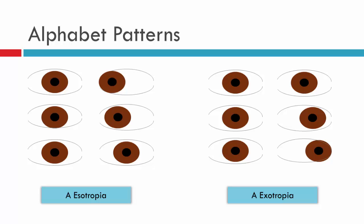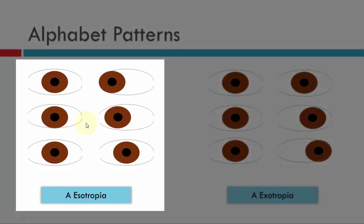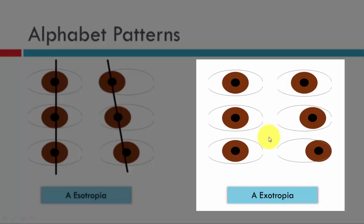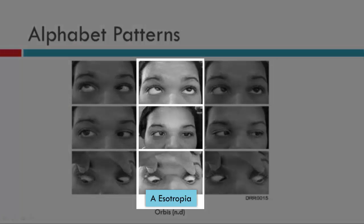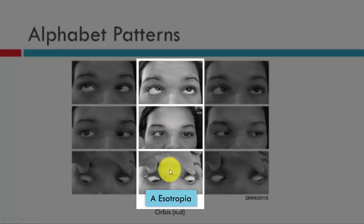Here we have A-patterns. In the image to the left, an A-eso: eso in primary, the eso gets larger in up gaze and smaller in down gaze, producing an A-eso pattern. To the right, an exo in primary that is smaller in up gaze and larger in down gaze, producing an A-exo pattern. Another patient shown in nine positions of gaze clearly has a right esotropia in primary position, which increases in up gaze and decreases in down gaze. Measuring and comparing these positions classifies this patient as having an A-pattern, and since they began with an eso in primary, this patient is classified as an A-esotropia.